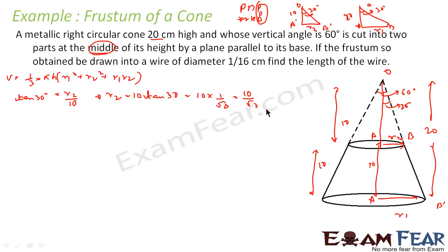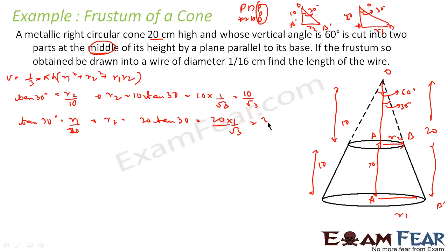Similarly, in the other triangle, tan(30°) = r1 / 20, so r1 = 20 × tan(30°) = 20 × (1/√3) = 20/√3 centimeters. Now we have both r1 and r2, and we know the height h, so we can find the volume of the frustum.